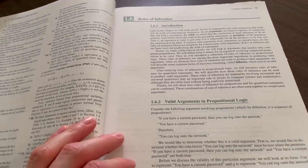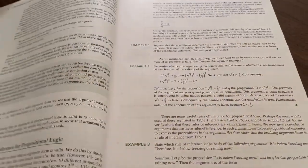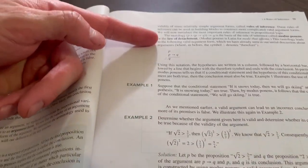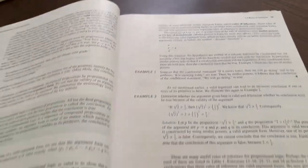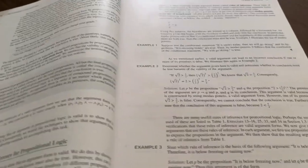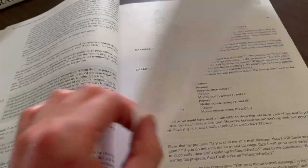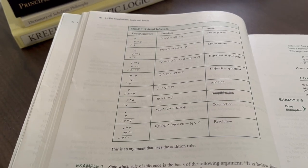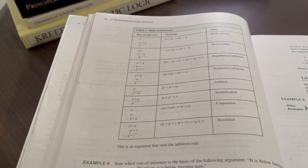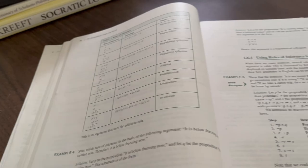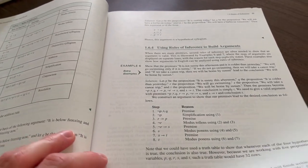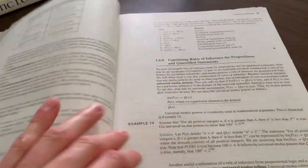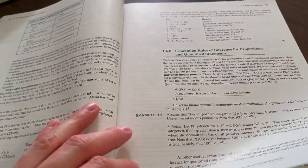Section 1.6 is on rules of inference. So we think about arguments and propositional logic. In predicate logic, we have things like modus ponens, also known as the law of detachment, which is not my preferred way. It's not my preferred terminology. But in any case. And here we have our rules of inference. Modus ponens, modus tollens, hypothetical syllogism, disjunctive syllogism, addition, simplification, conjunction, resolution. Using rules of inference to build arguments. You get into fallacies. Combining rules of inference per propositions and quantified statements.